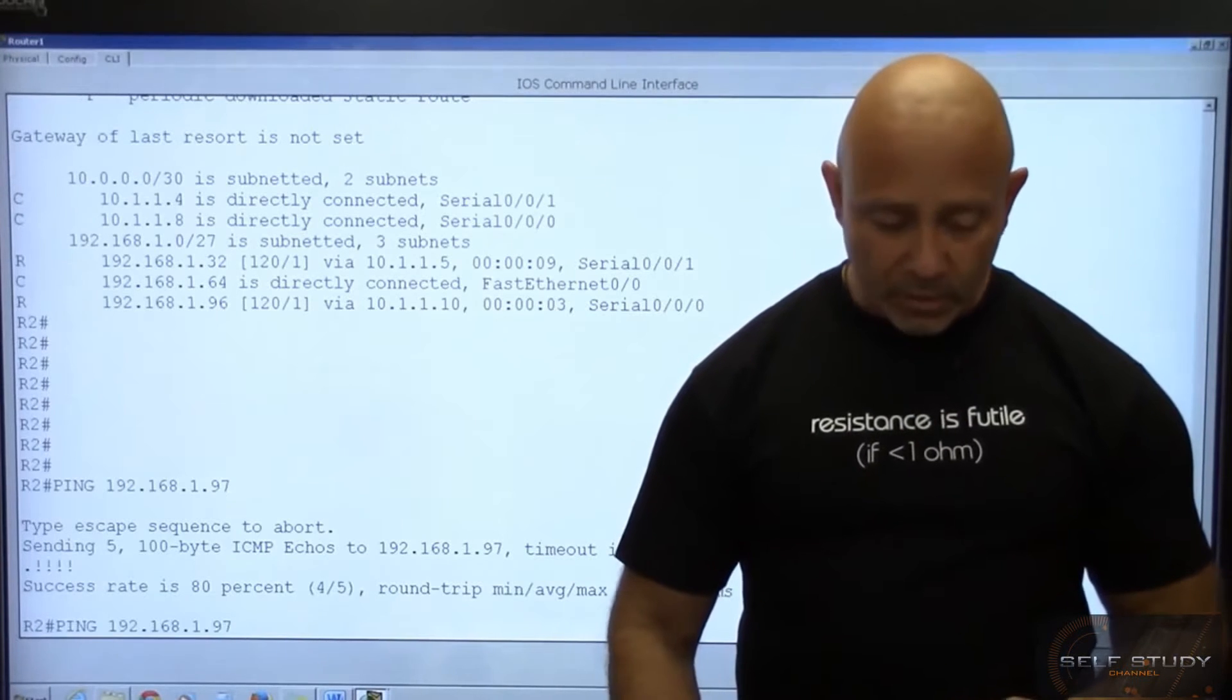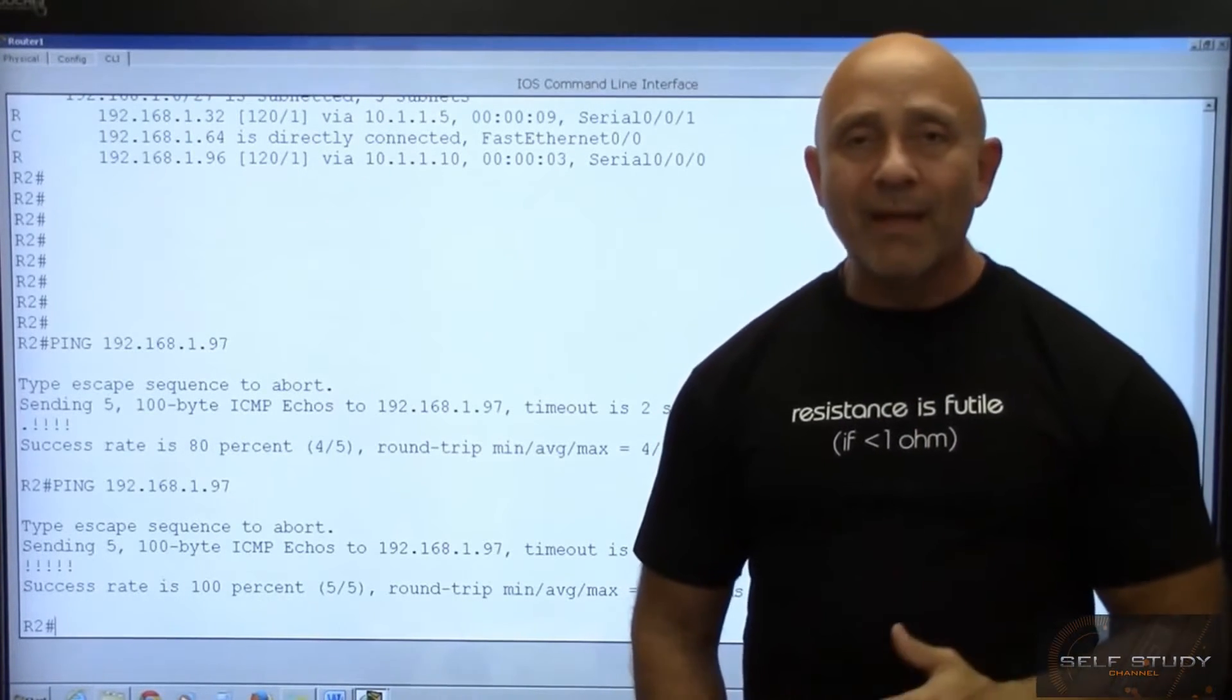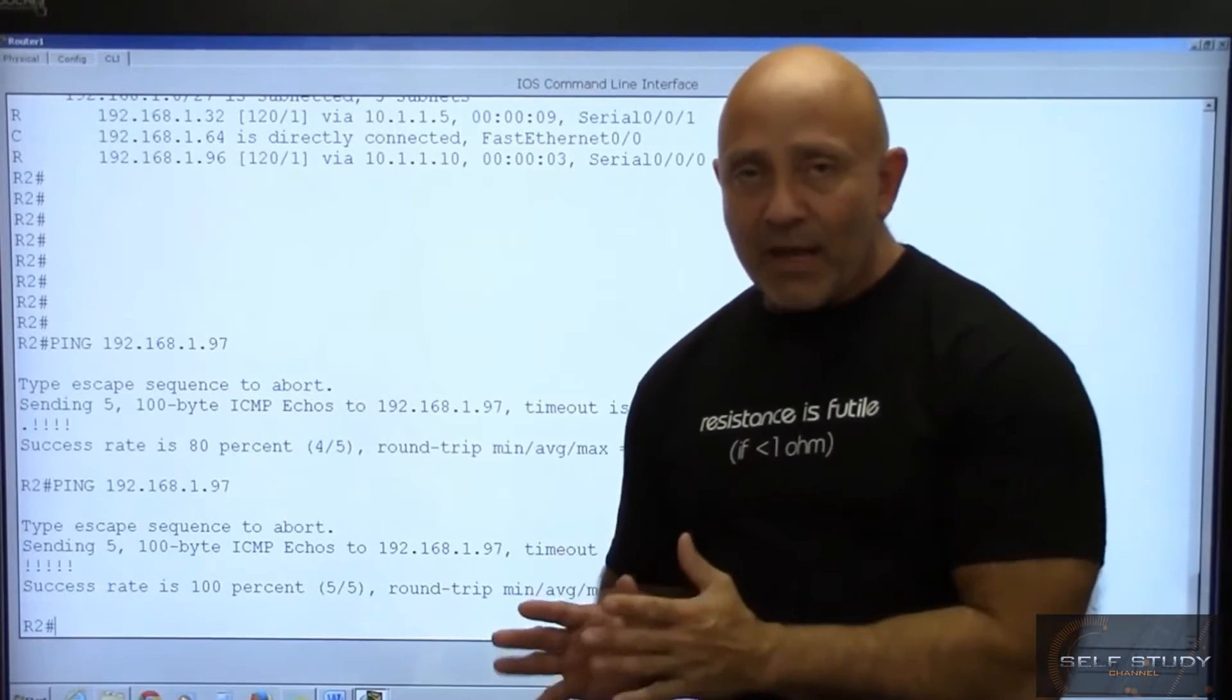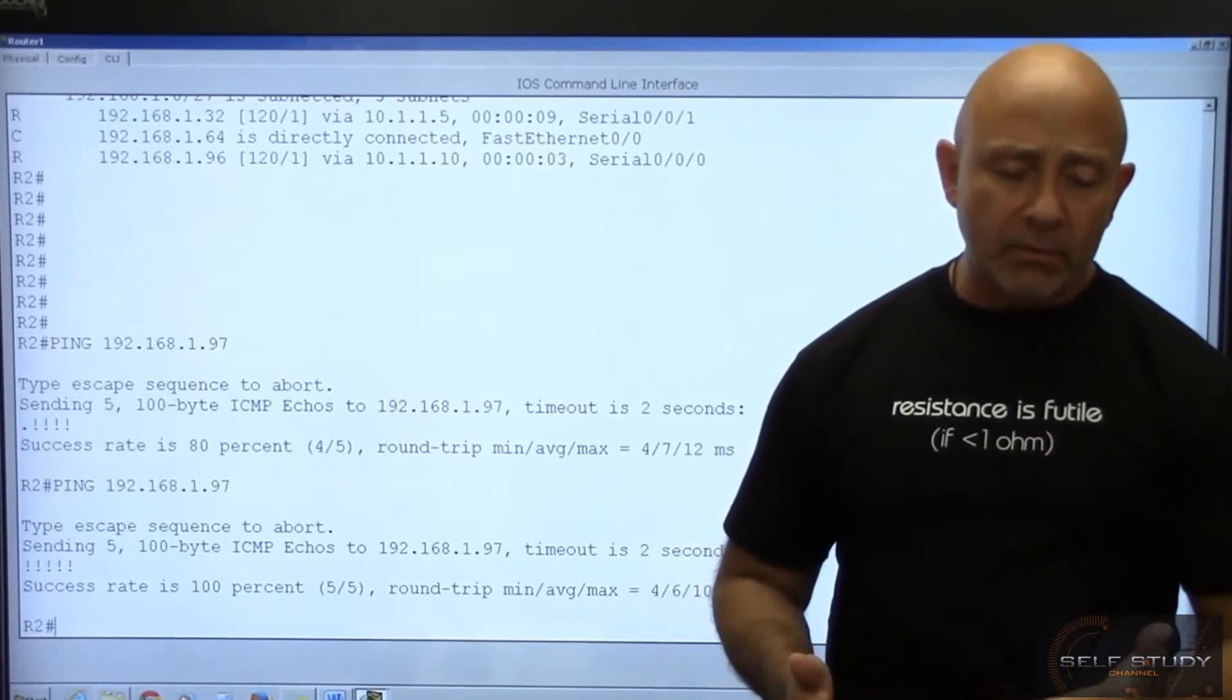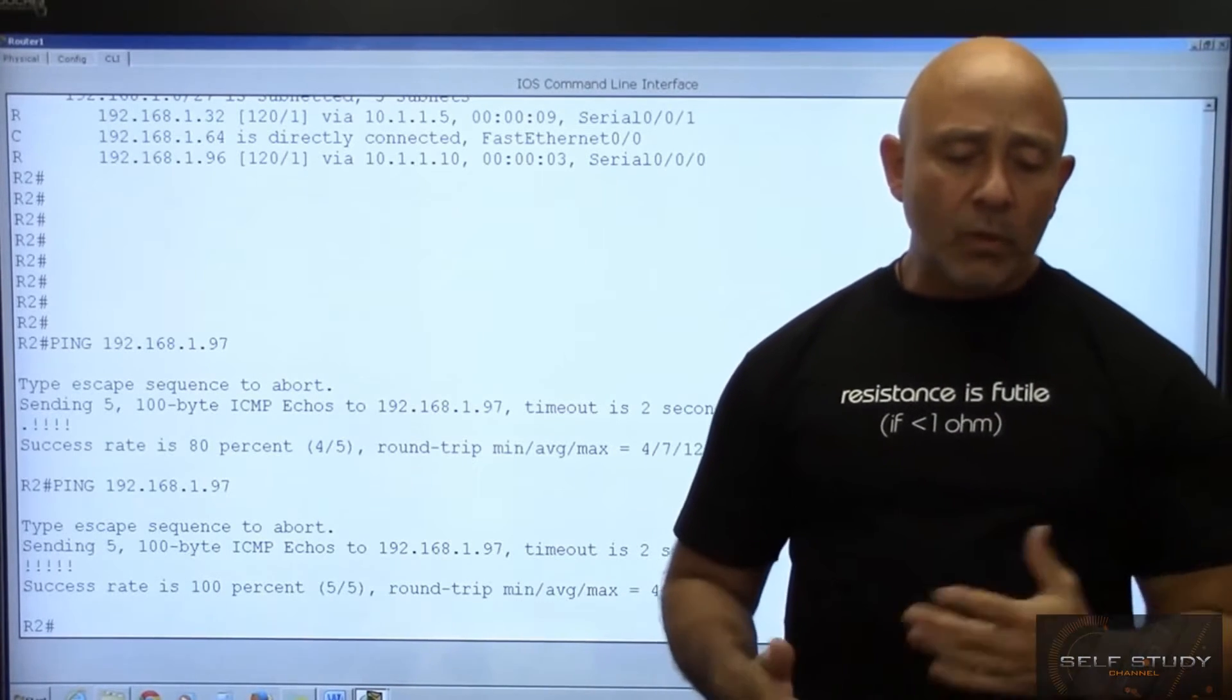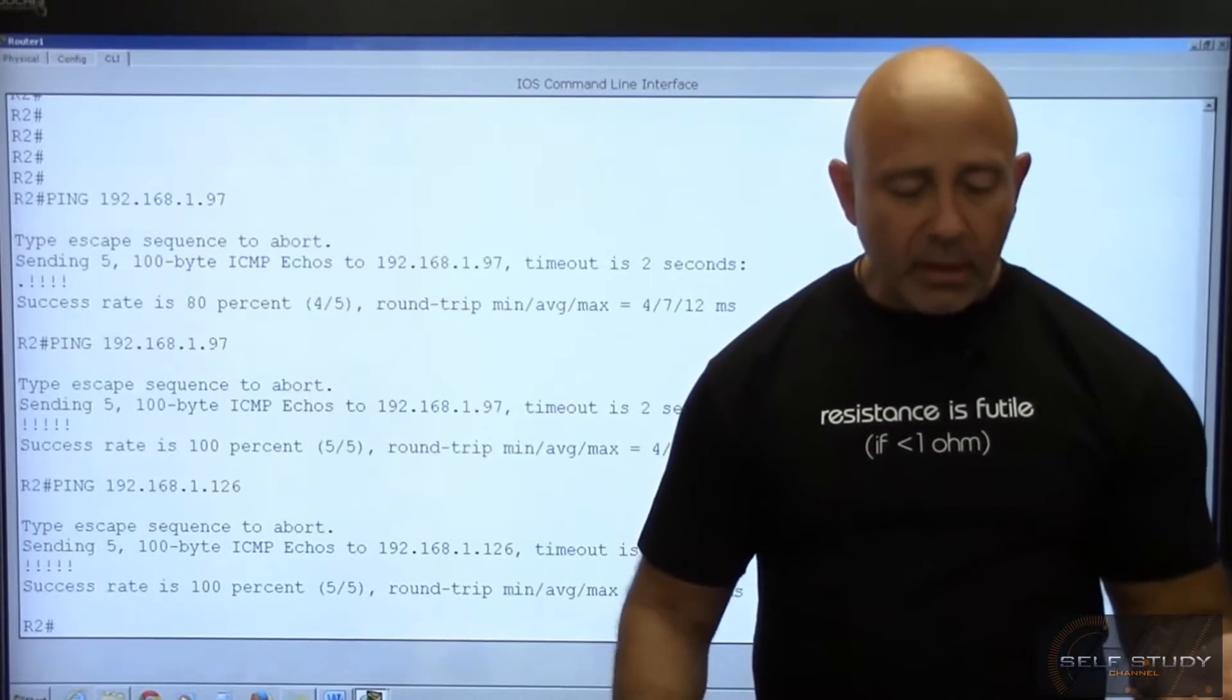All right, we just pinged. So IPv4, you see I'm pinging to the 97, that's the actual IP address of the PC. The default gateway I used the last available, so if we increment by 32, that's 120, so it'll be 126. The gateway will be 126 there.